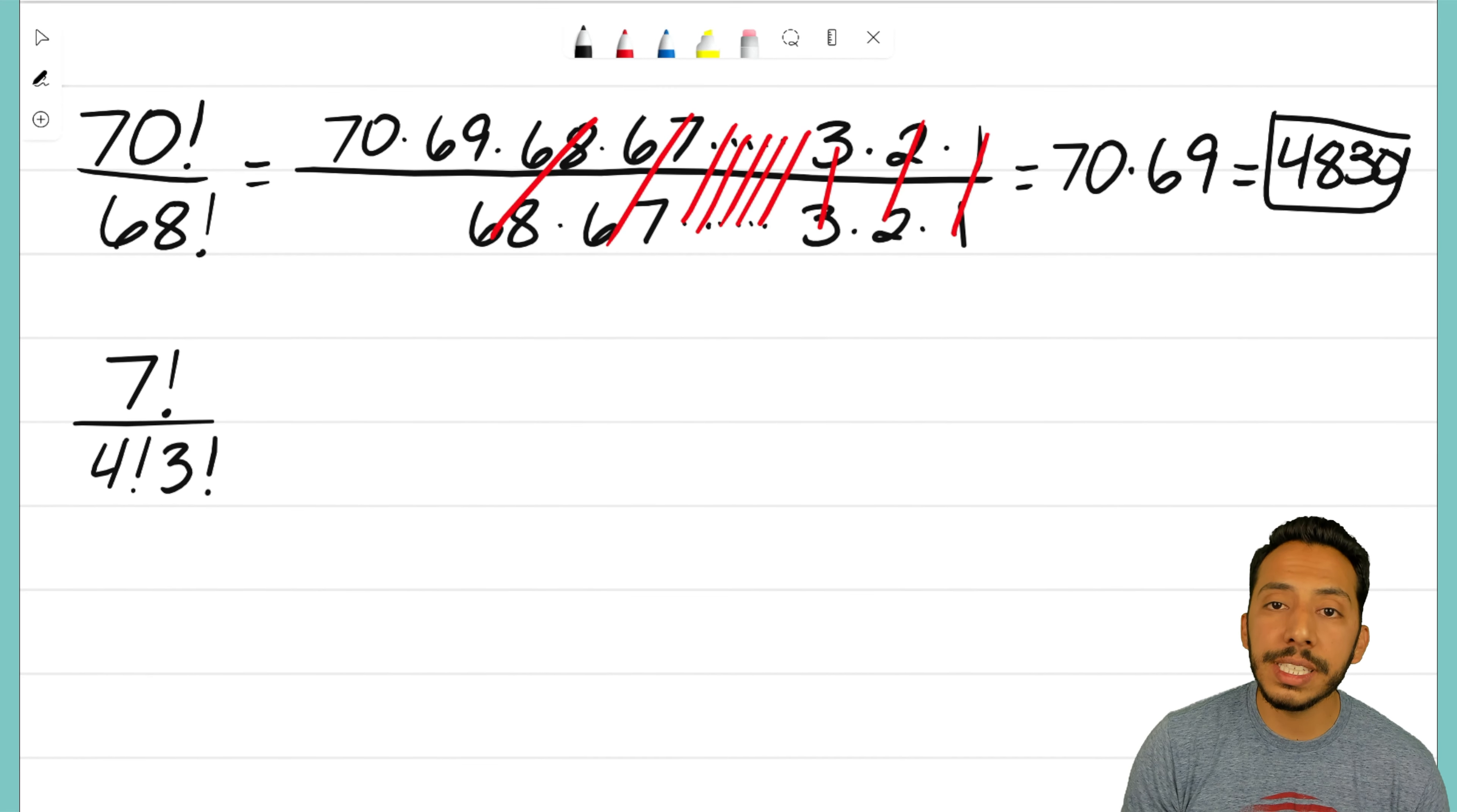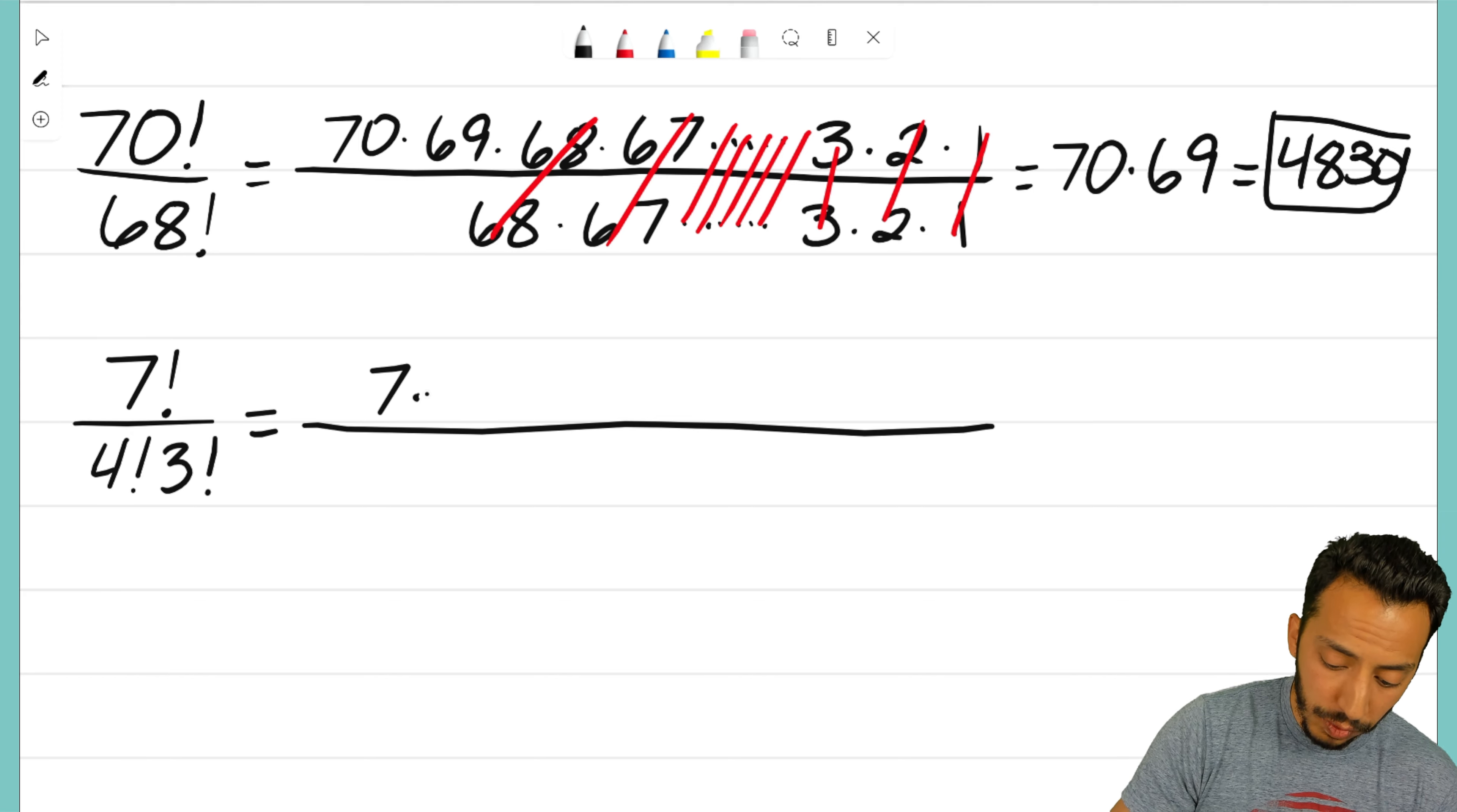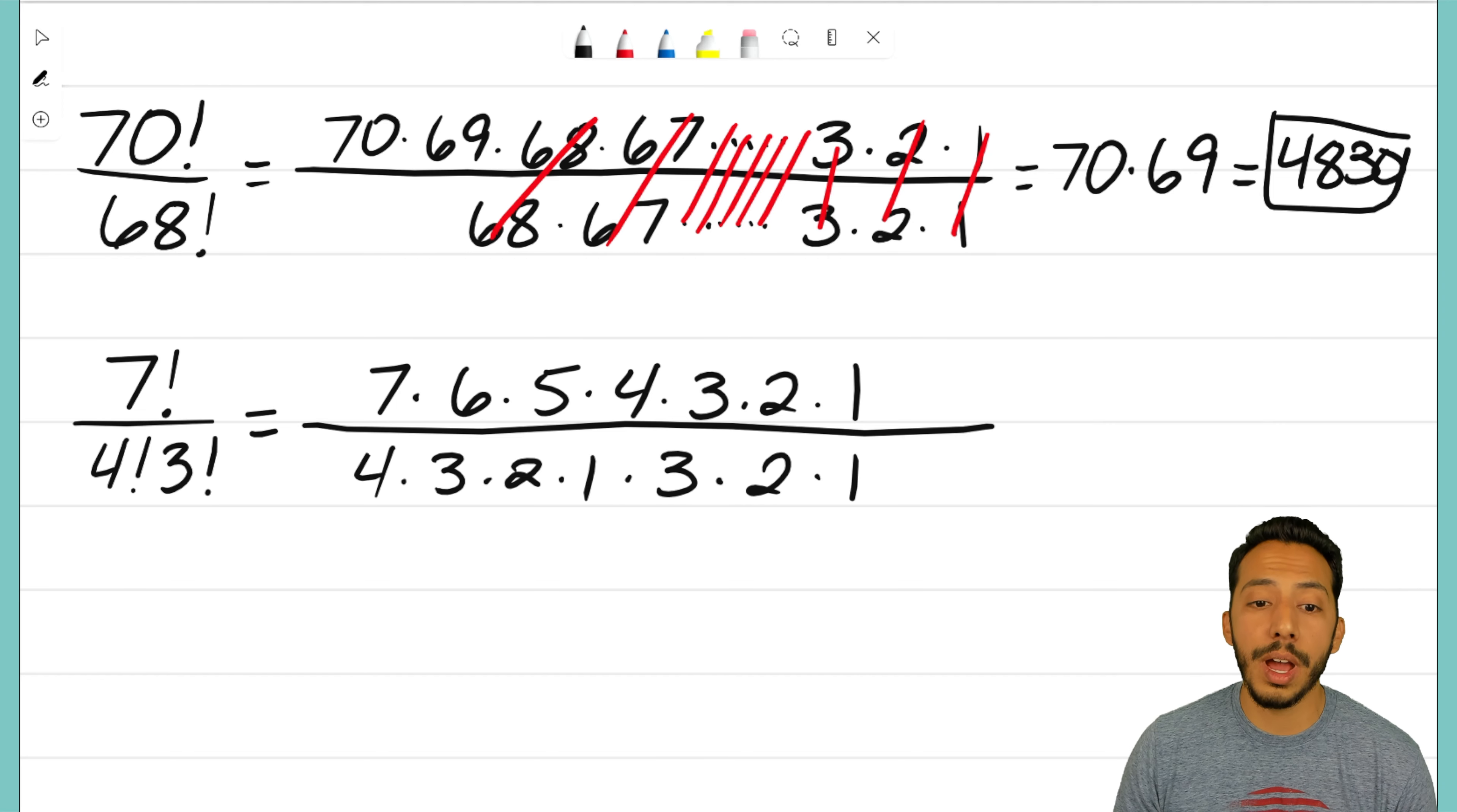Let's look at this final example. This one is a little different than the rest because it has two factorials on the bottom, but that's okay. We can still work this out. It might not be as nice as the other problems, but it's nothing we can't handle. Seven factorial on top is 7 times 6 times 5 times 4 times 3 times 2 times 1. On the bottom, first we have 4 factorial—that's 4 times 3 times 2 times 1. After that, we also have 3 factorial, so I need to punch that in as well.